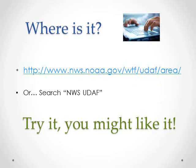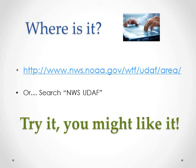Where can I find the UDAF? Using the internet, navigate to the URL: http://www.nws.noaa.gov/WTF/UDAF/area. Alternatively, it can be found fairly easily by simply searching NWS UDAF. The page should be one of the first items returned in your search. The Experimental National Weather Service User Defined Area Forecast, or UDAF. Try it. You might like it.